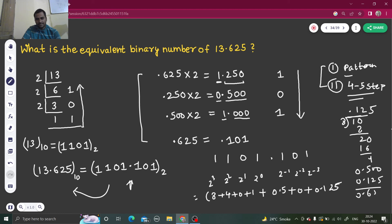If you add, you will get 0.500 and 0.125, so you are going to get 0.625. 8, 4—that's 12—plus 1 is 13. So 13 from here and 0.625 from there. If you add it, you are going to get 13.625, which is correct.